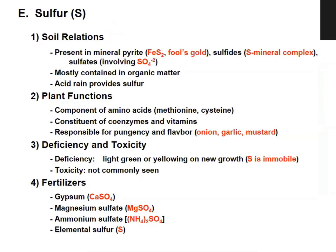The second secondary macronutrient is sulfur. The functions of sulfur include being a component of amino acids, particularly sulfur-containing amino acids such as cysteine and methionine. It is also a constituent of various coenzymes and vitamins, and is responsible for pungency and flavor in onion, garlic, and mustard.